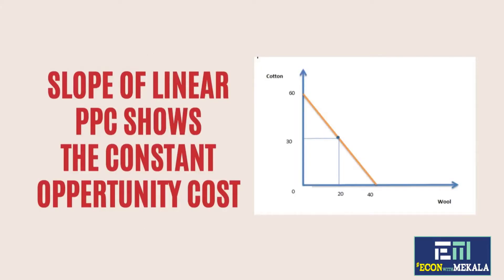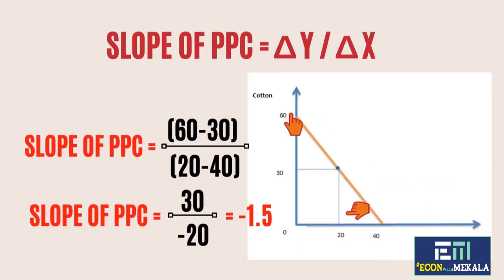The slope of linear PPC shows the constant opportunity cost. For instance, if you move from 0 units to 30 units of cotton, there is an opportunity cost. And this opportunity cost is the same as the opportunity cost occurring when you're moving from 30 units of cotton to 60 units of cotton. That's why we say PPC has constant opportunity cost.